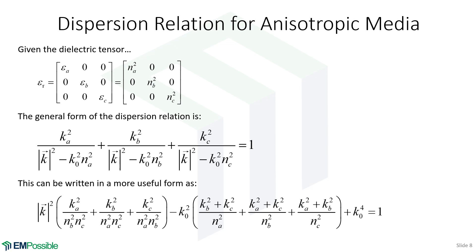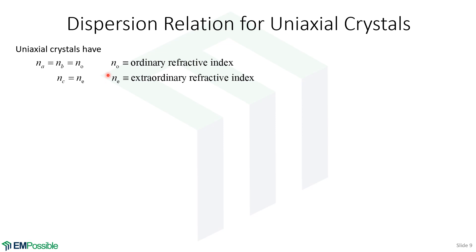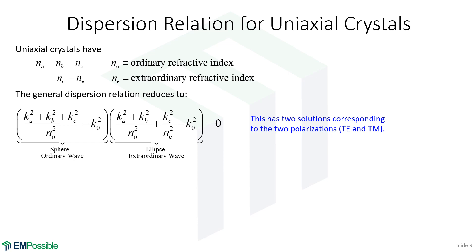For uniaxial crystals: remember that a uniaxial crystal has two equal tensor values — the ordinary values — and one extraordinary value. In terms of refractive index, the dispersion relation is the product of two things: one is the equation for a sphere, and the other is the equation for an ellipse — and we're starting to get into what dispersion surfaces are. Each one corresponds to a different polarization. In a homogeneous medium we always have two possible polarizations; one wave vector follows the sphere rule (ordinary wave) and the other follows the ellipse rule (extraordinary wave).